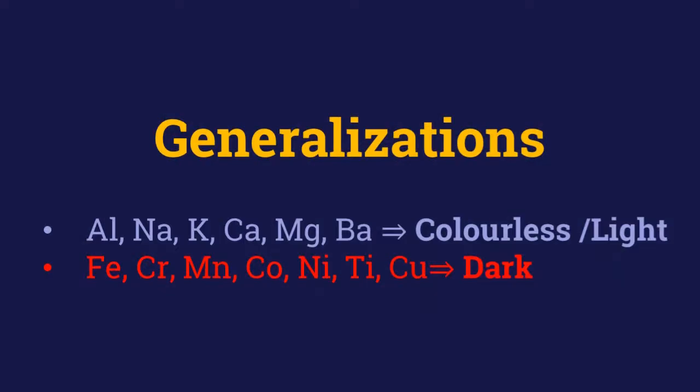Generally speaking, minerals containing aluminum, sodium, potassium, calcium, magnesium and barium have a light color or they are colorless. Minerals containing iron, chromium, manganese, nickel, titanium and copper are darker minerals.